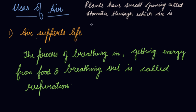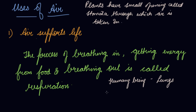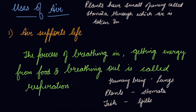So human beings have lungs to take in oxygen, plants and trees have stomata to intake carbon dioxide for the preparation of food, whereas fish have gills to breathe in the oxygen.